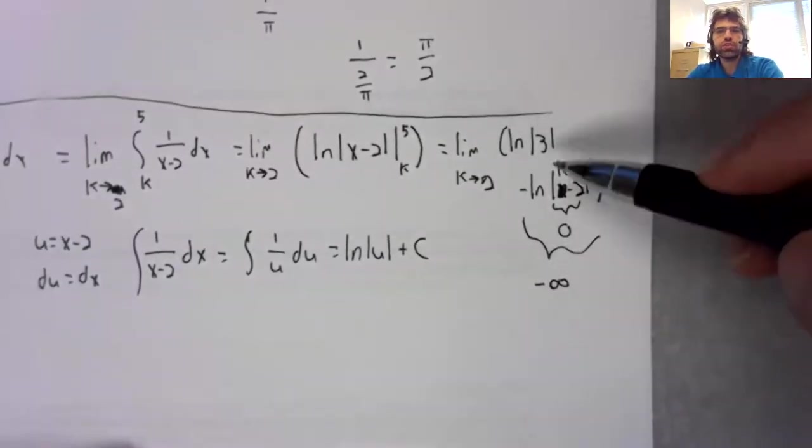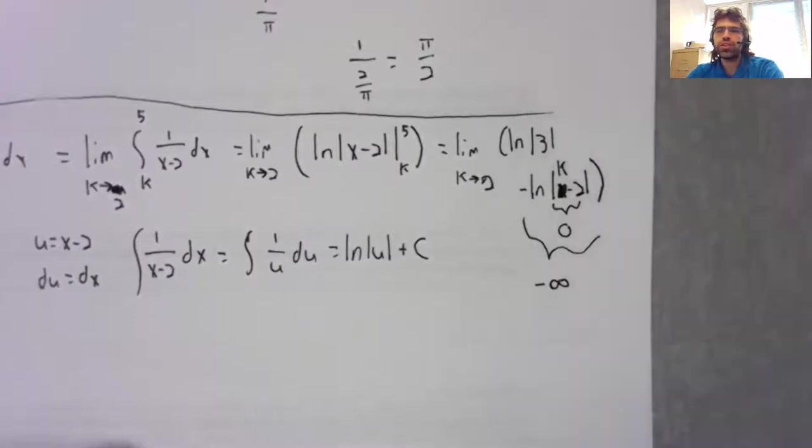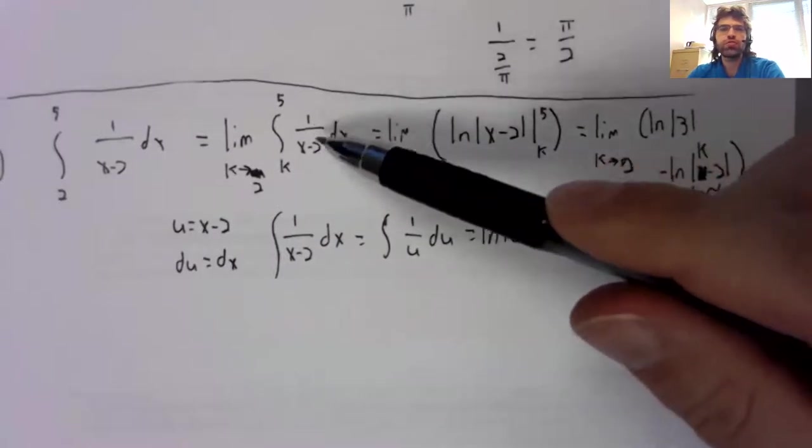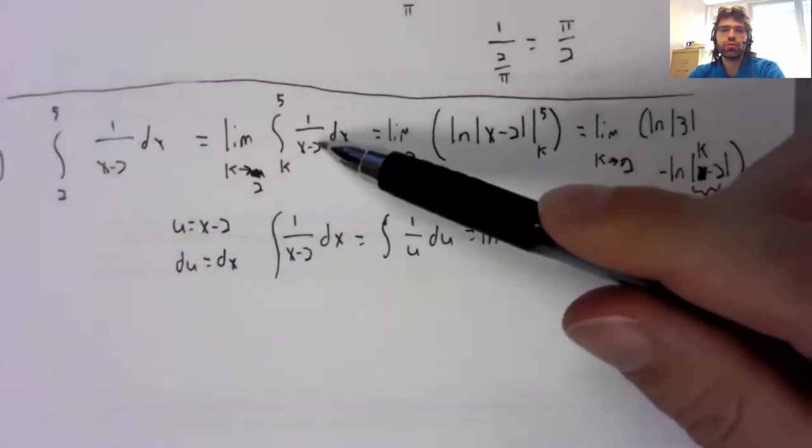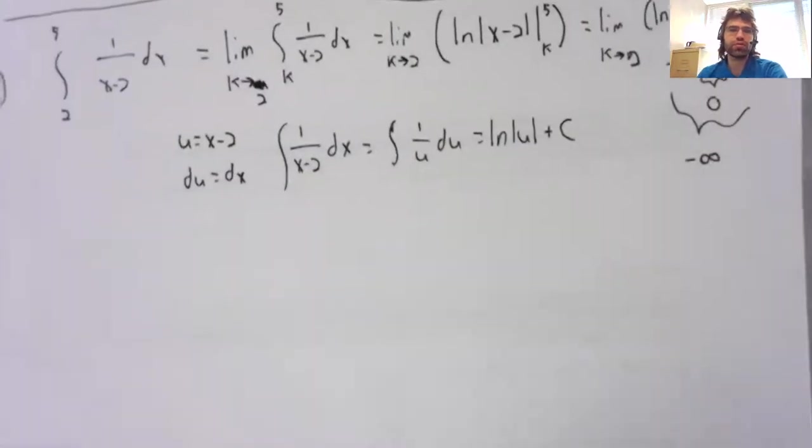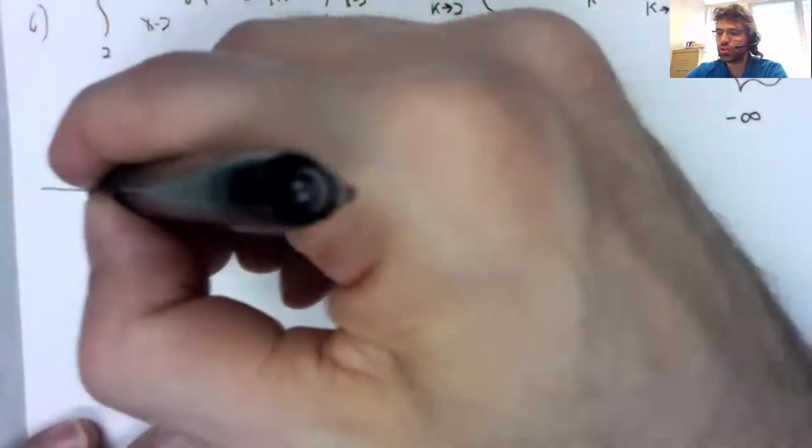So the natural log of three plus infinity. That's not a number. This integral diverges.